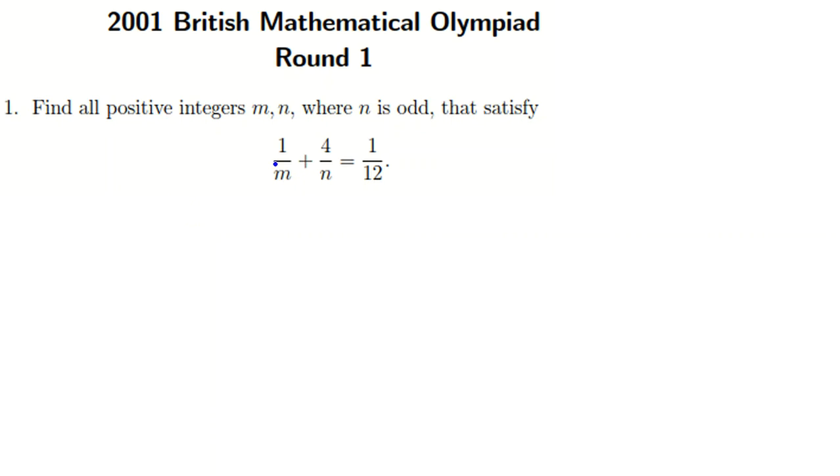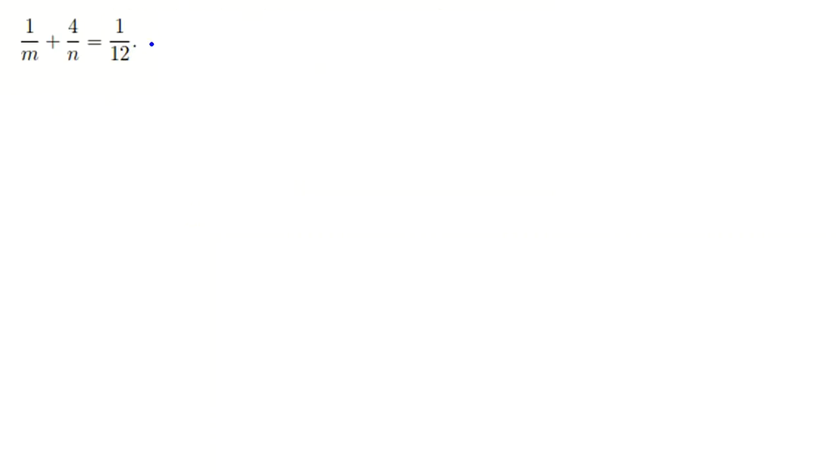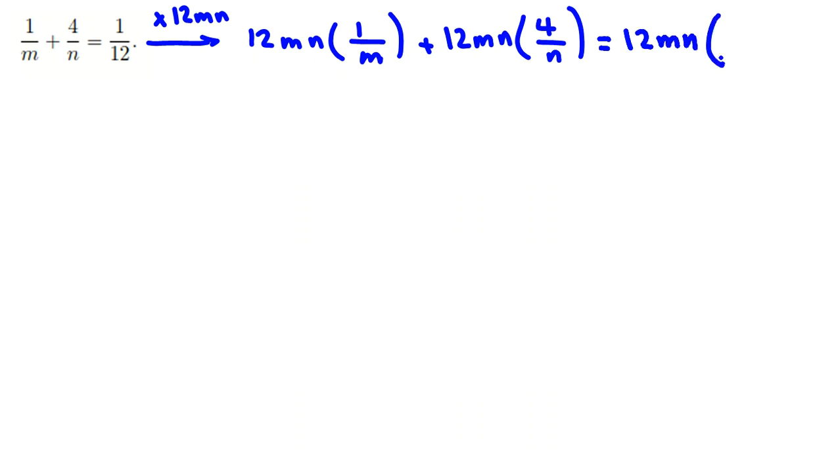So let's solve this problem. We want to get rid of denominators, so we should multiply by 12mn. So it will be 12mn times 1/m plus 12mn times 4/n equals 12mn times 1/12.